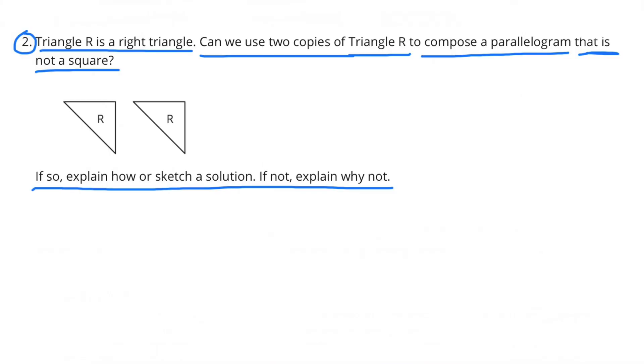Number 2. Triangle R is a right triangle. Can we use two copies of triangle R to compose a parallelogram that is not a square? If so, explain how or sketch a solution. If not, explain why not.